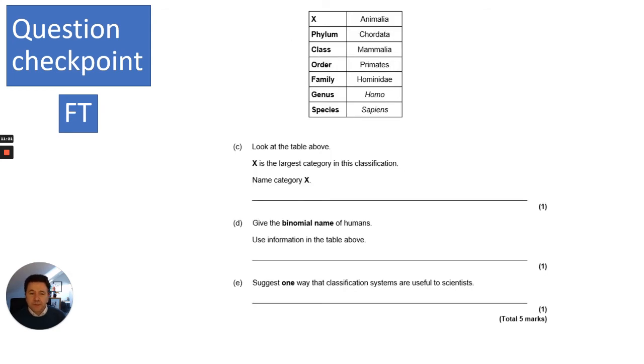The table below shows one system for classifying humans. Again, it's a classification system. It asks who devised this system. You do know that the hierarchical system was devised by Linnaeus. I'd like you to pause, read, and answer in three, two, one.